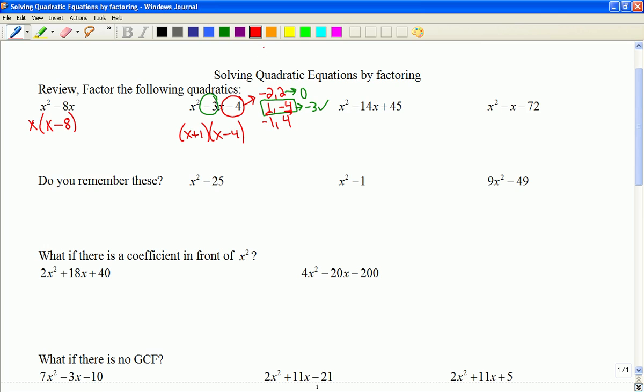So as you play around with factoring and you get more experience, the numbers start to come a little quicker to you. For example, of 45, 9 and 5 come to mind. So if I'm looking at 9 and 5, that does multiply to negative 45, but it won't add up to negative 14. So what I'm going to do instead is use negative 9 and negative 5, because that adds up to negative 14 and multiplies to positive 45. So I would have x minus 9 and x minus 5 for the factors.